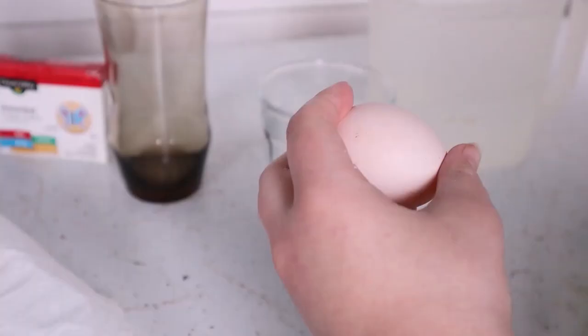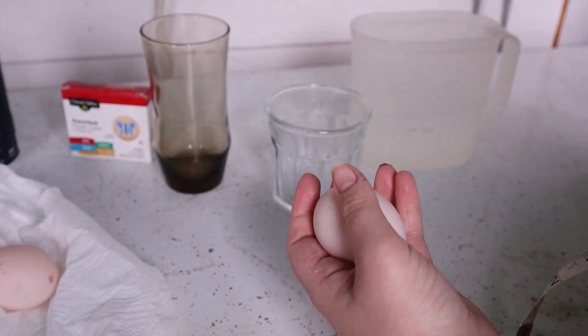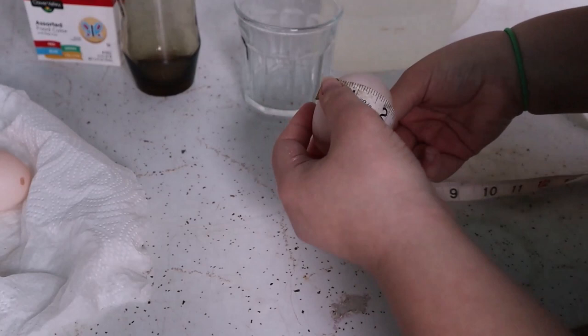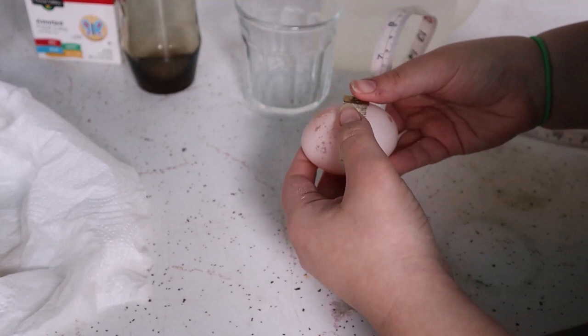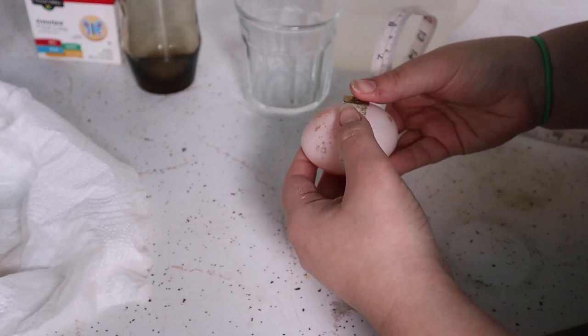The shells are now completely gone and only the semi-permeable membrane is showing. This semi-permeable membrane allows some materials to enter and some to leave. For our next step, we want to measure our eggs and document it. I am also going to rinse out the glasses. You can either rinse them out or use new glasses.